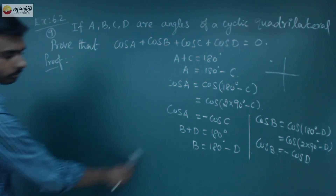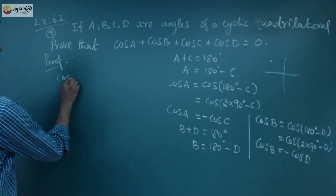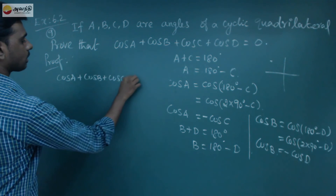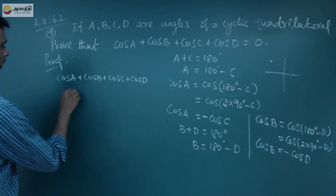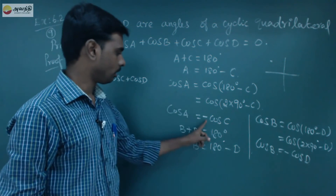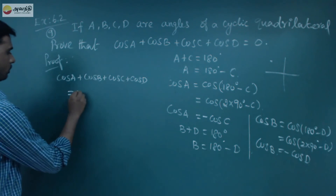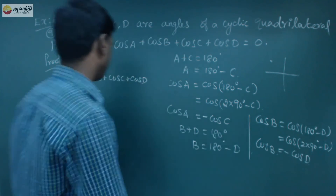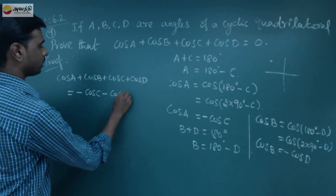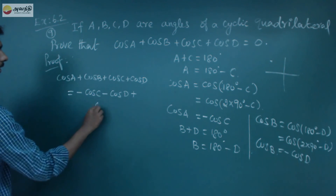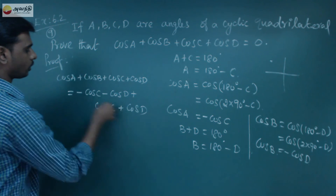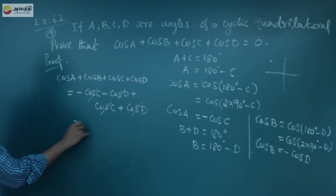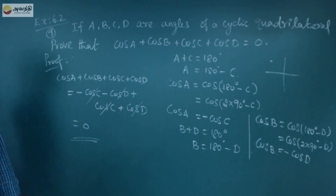Now we can prove the result. Cos a plus cos b plus cos c plus cos d equals negative cos c plus negative cos d plus cos c plus cos d. The negative cos c and positive cos c cancel, and the negative cos d and positive cos d cancel. So the total equals 0. This completes the proof.